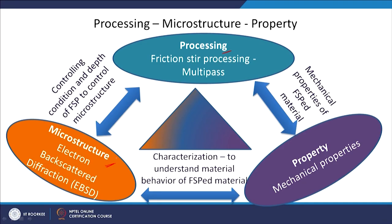There will be a change in the microstructure and you can use certain techniques to characterize it. The property which you are going to check is usually mechanical property because we are looking at structural materials. This processing-microstructure-property relationship gives feedback when the required property has not been achieved, so you can adjust the processing conditions. This kind of interrelationship between processing, microstructure, and property keeps taking place.